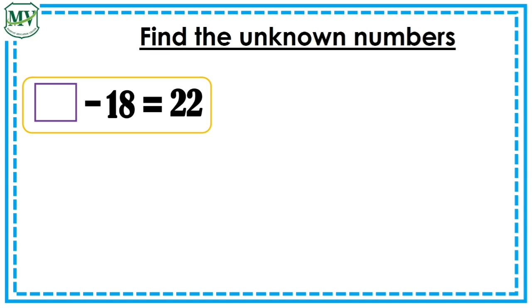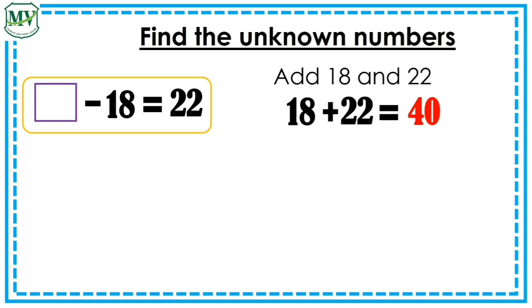Now, let's practice. Blank minus 18 equals 22. Add 18 and 22. So, 18 plus 22 is equal to? That's right! It's 40.